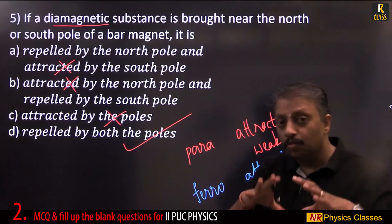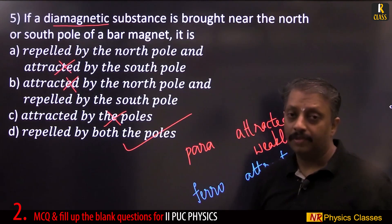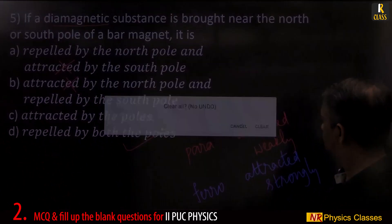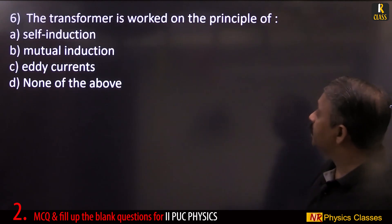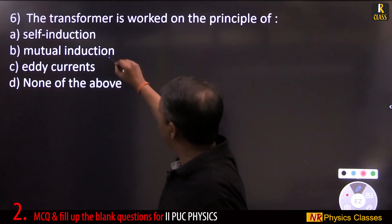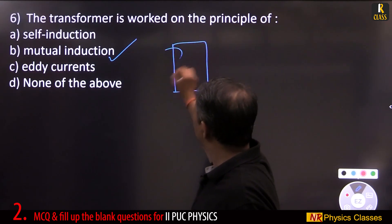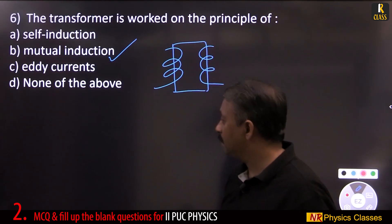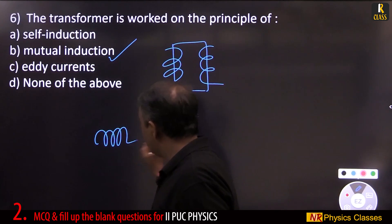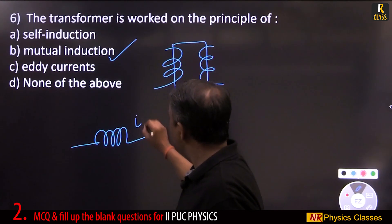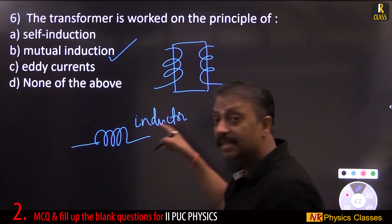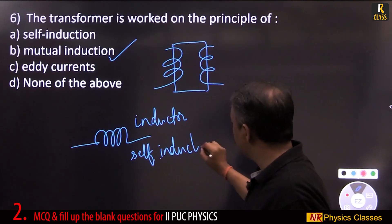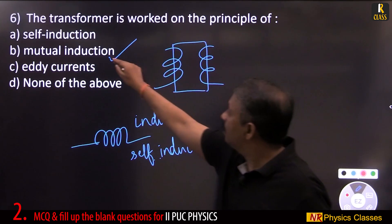A transformer works on the principle of mutual induction, because a transformer has two coils — one influences the other. If it were a single coil (an inductor), the principle would be self-induction. So the principle for a transformer is mutual induction.